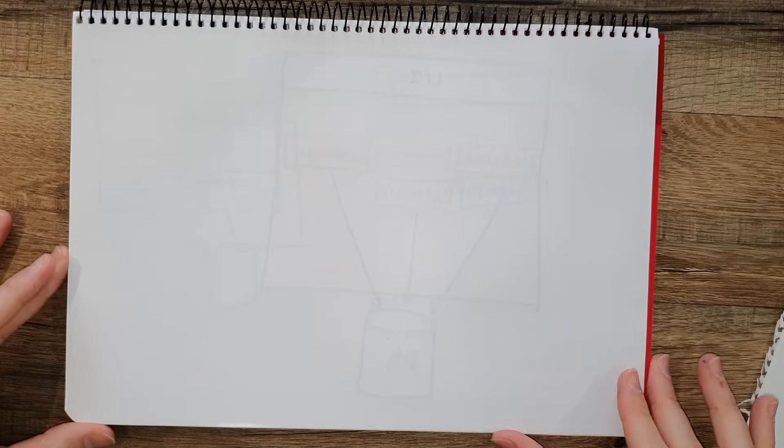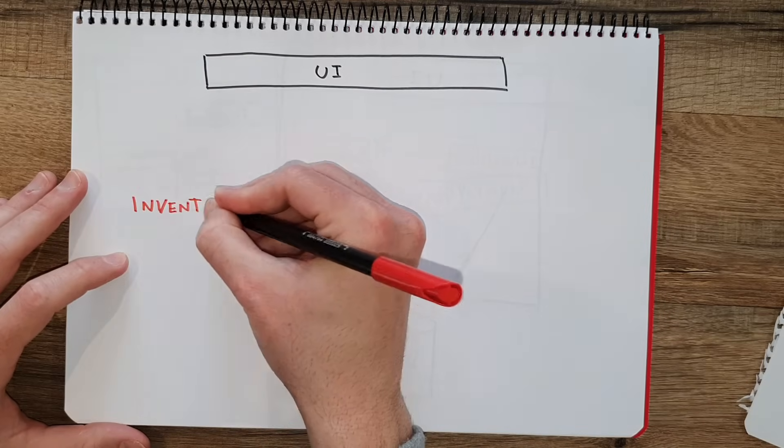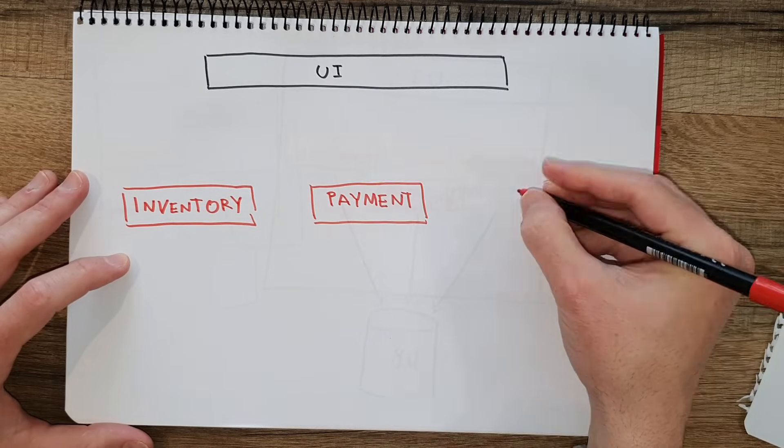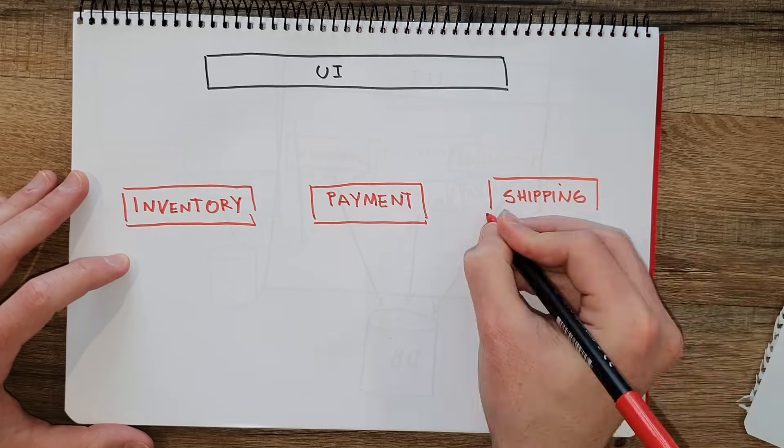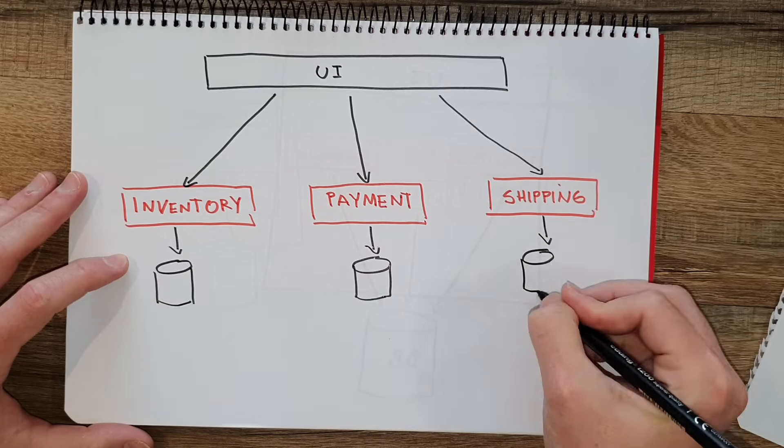For example, if you want to do transactions and you have to interact between the different modules, you can do that with all of them in the same system and share a common database between them. Then we can move into a microservices architecture, where each of these modules could be potentially different services — like the inventory, payment, and shipping services — and each of them could have their own database.